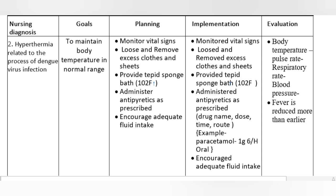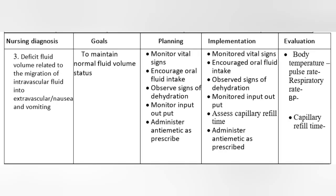Encourage adequate fluid intake. Implementation: Monitored vital signs. Loosened and removed excess clothes and sheets. Provided tepid sponge bath. Administered antipyretics as prescribed — drug name, dose, time, route. Example: Paracetamol 1 gram 6-hourly oral. Encouraged adequate fluid intake. Evaluation: Body temperature, pulse rate, respiratory rate, blood pressure — fever is reduced more than earlier.